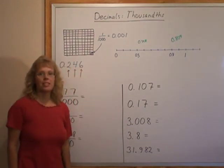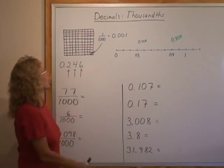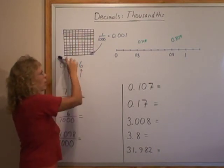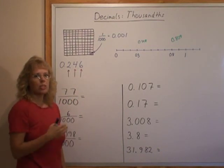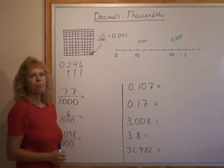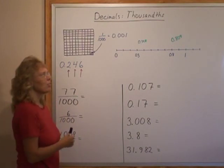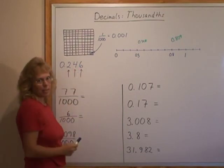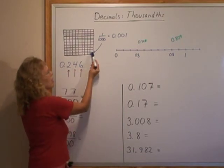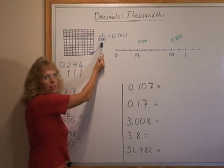Now to illustrate thousandths is not as easy as to illustrate tenths or hundredths. I drew here, this is one whole, it's divided already into hundred parts so each one of these little squares would be a hundredth. But to illustrate thousandths I have to divide one of these into ten new parts, and so this is divided into ten new parts and one of the parts is colored and so that is one thousandth.